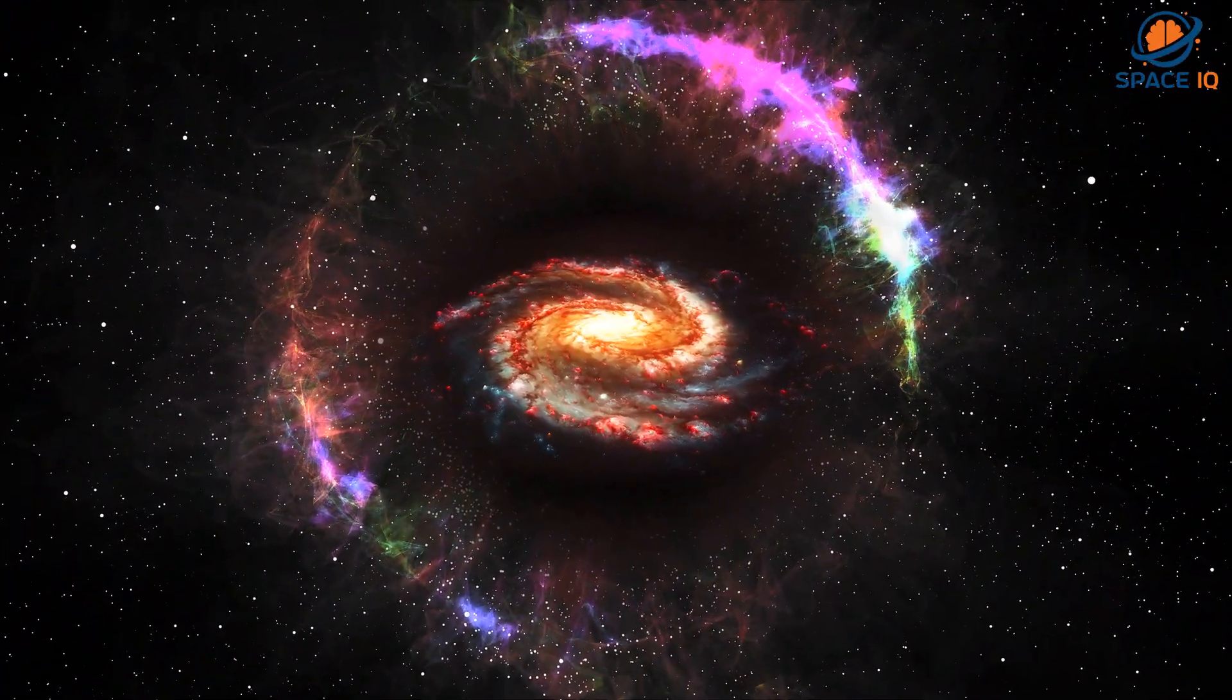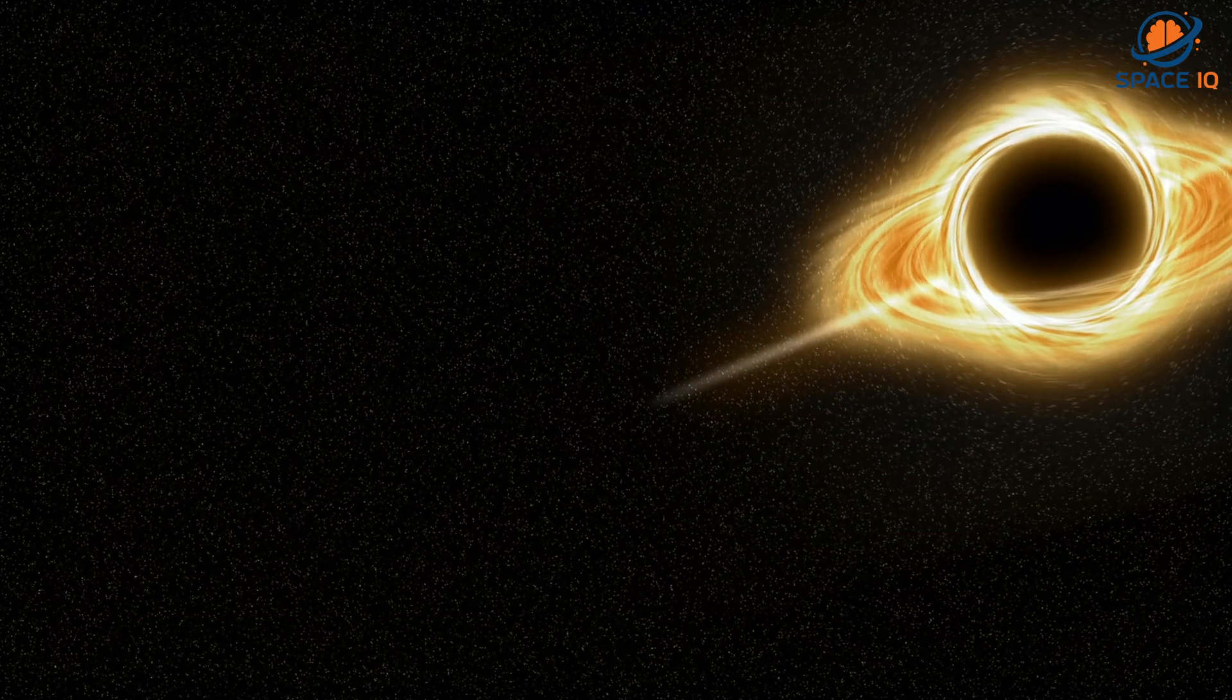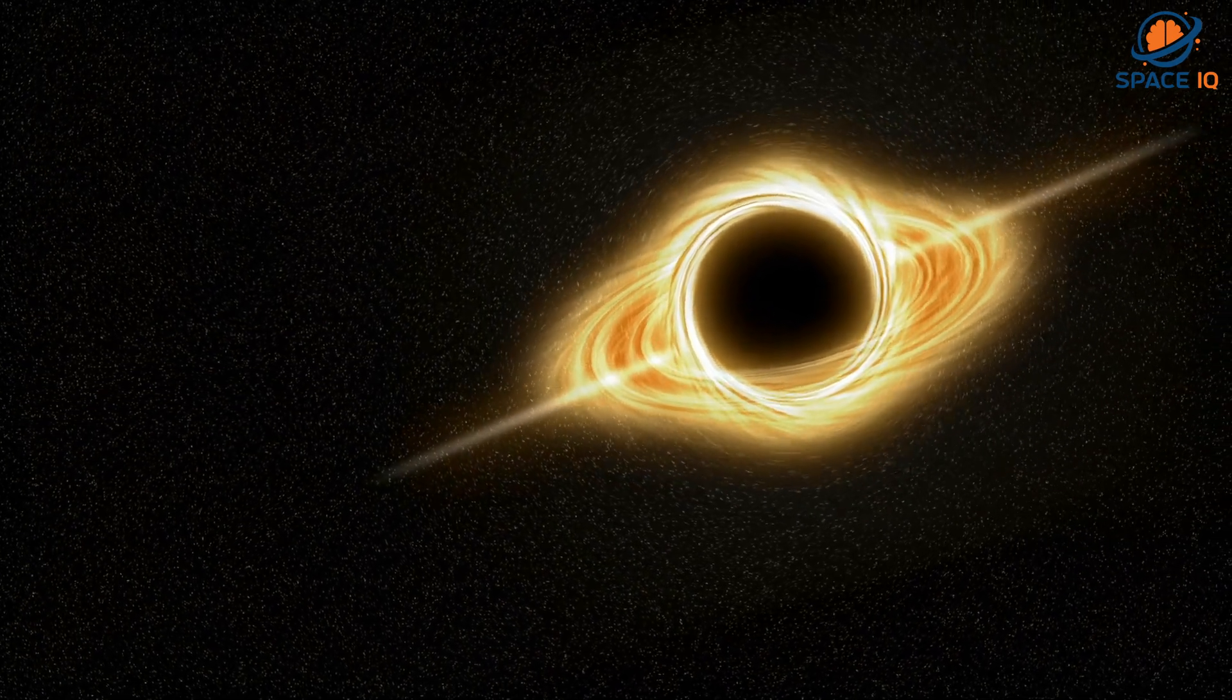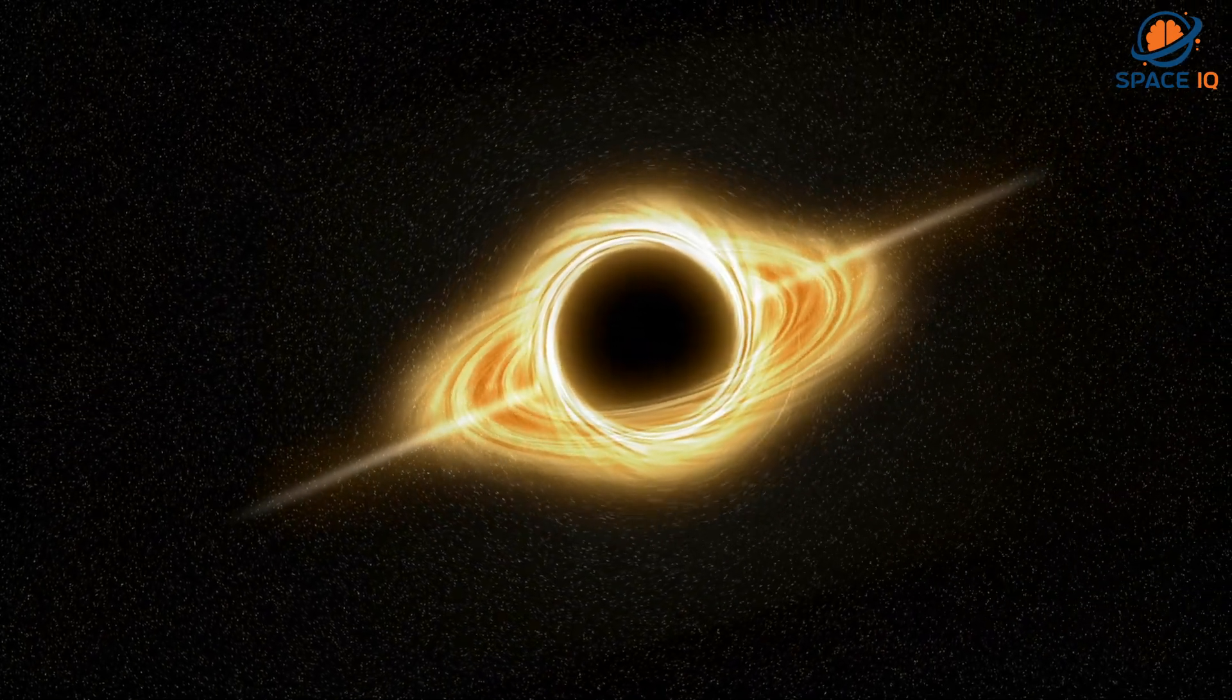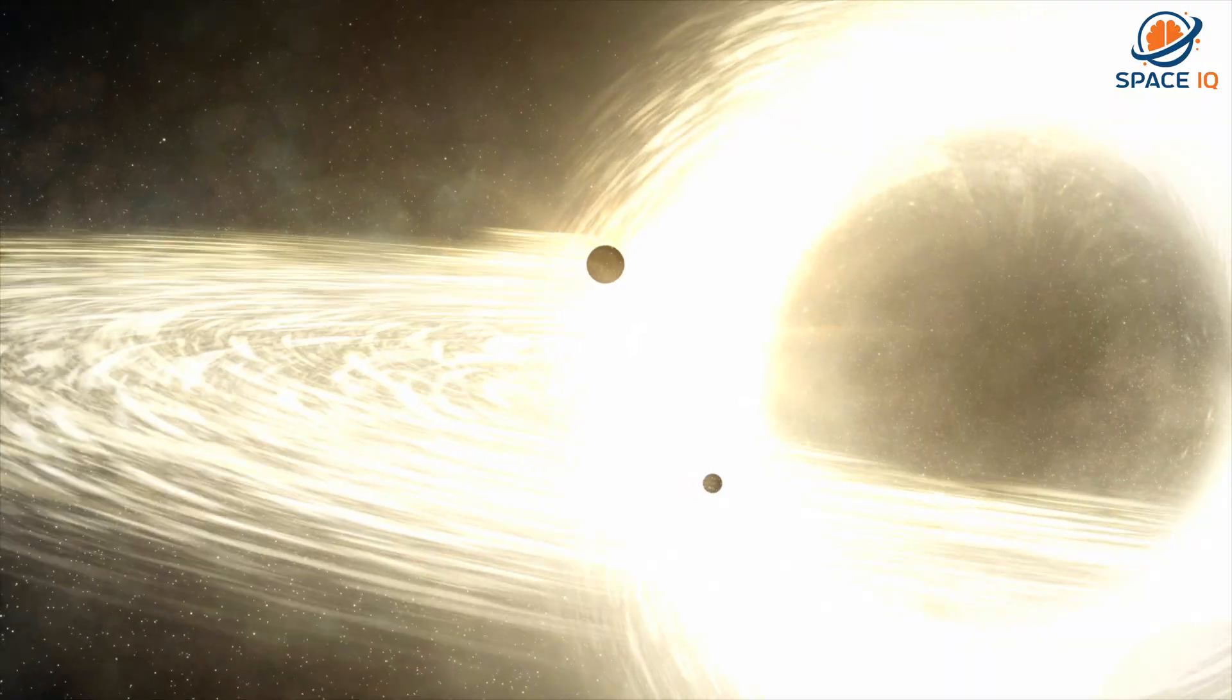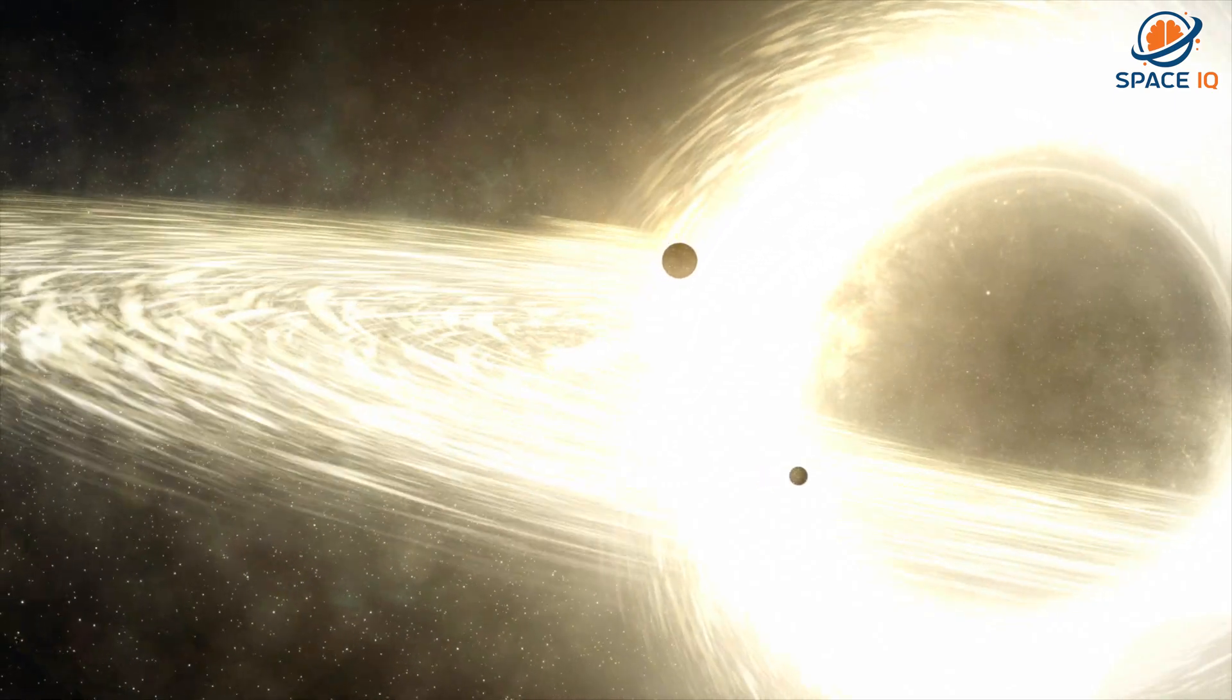If black holes are black, how do scientists know they are there? A black hole cannot be seen because strong gravity pulls all of the light into the middle of the black hole. But scientists can see how the strong gravity affects the stars and gas around the black hole.